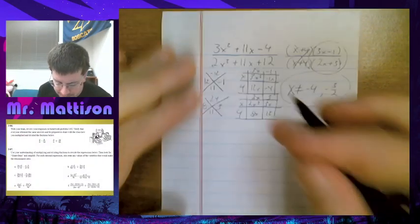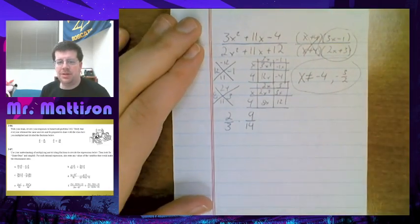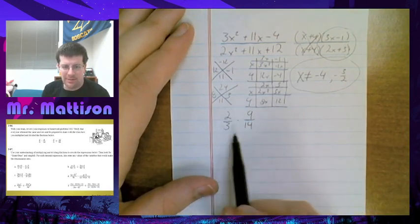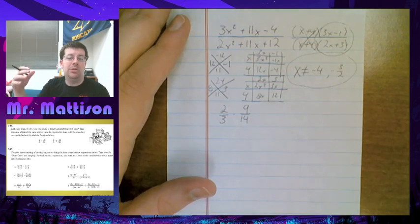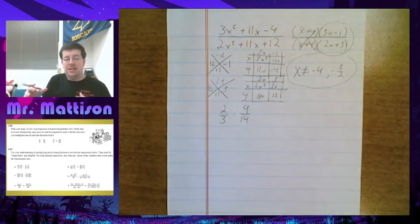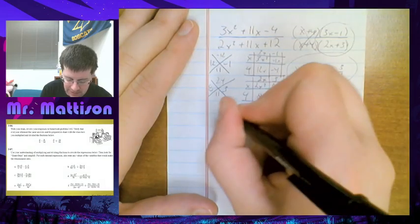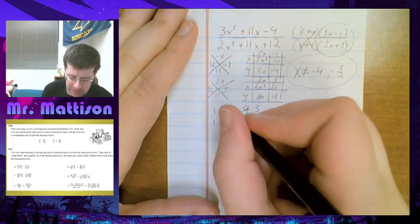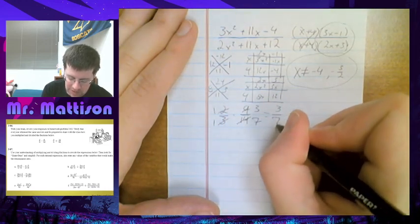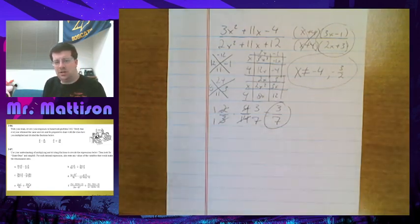We have 2 thirds times 9 fourteenths. Oftentimes we say we can't reduce this or this, so let's do top times top, bottom times bottom and get 18 over 42. But we can actually do our reduction a lot earlier — we can do it diagonally, because we're multiplying. So 2 and 14 reduce to 1 and 7, and 3 and 9 reduce to 1 and 3. What we get is just 3 over 7, which is already reduced. It's not some massive crazy trick — it just does your simplification early so you don't have to deal with really big numbers all at once later.